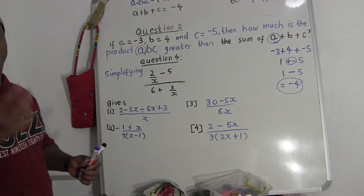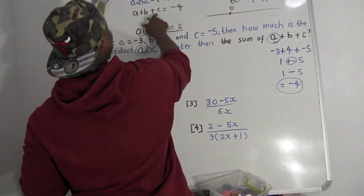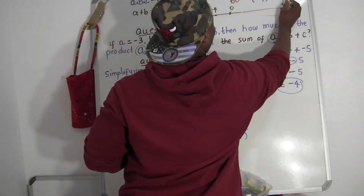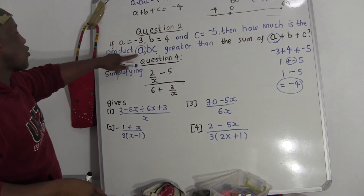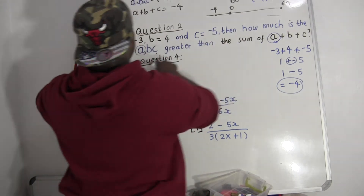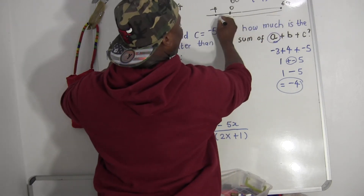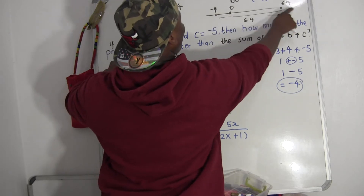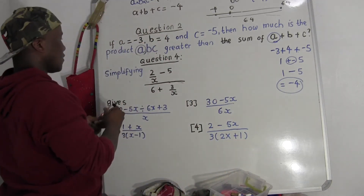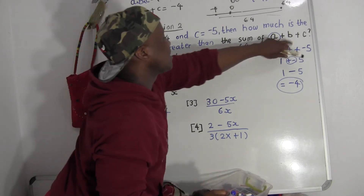Our answer is positive sixty-four. If you draw a number line: the sum A plus B plus C is at negative four, and the product is at sixty. The distance from negative four to sixty is sixty-four steps. So the product of ABC is greater than the sum A plus B plus C by positive sixty-four. That's the answer for the second question.